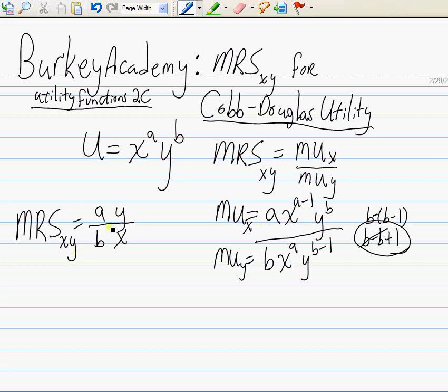So no matter what the exponents are on the Cobb-Douglas utility function, the marginal rate of substitution is going to be a very simple looking function. It's just going to be a over b, the exponent on the x divided by the exponent on the y, times y over x. Very simple.